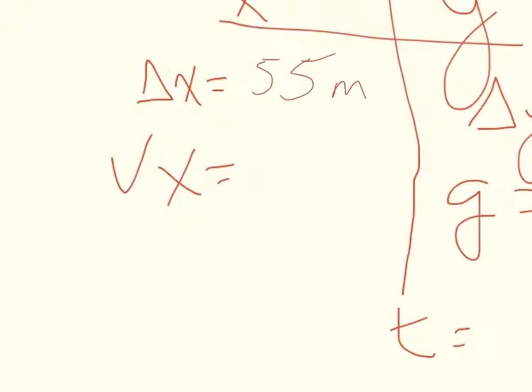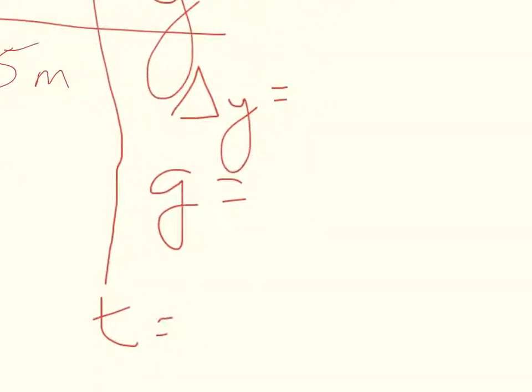And I know that the height of my cliff is my Δy, so I'm going to put that information here: 122.625, I believe. Let me check, just double check. 122.625.